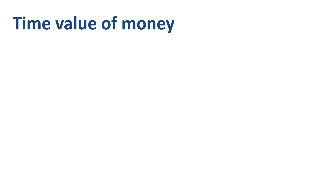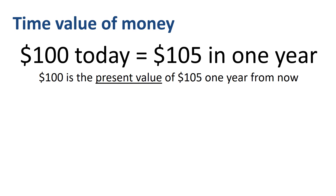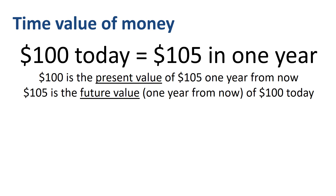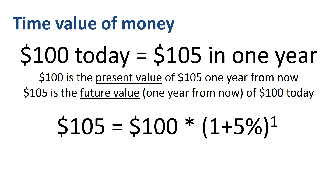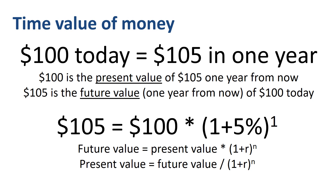We have identified the time value of money for you. The time value that we found in this example is that $100 today equals $105 in one year. $100 is the present value of $105 one year from now. $105 is the future value one year from now of $100 today. Now for the math: $105 equals $100 times (1 + 5%) to the power of 1. The future value equals the present value times (1 + the rate of return) to the power of the number of years. The present value equals the future value divided by (1 + the rate of return) to the power of the number of years.